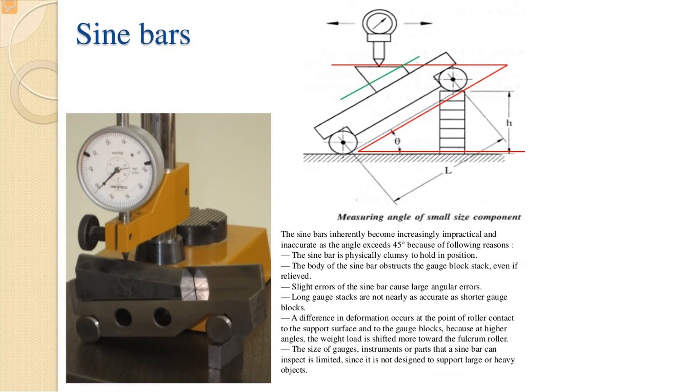In use of sine bars, we should take care of some points while using the sine bar. If the sine bar angle is above 45 degrees, the values are less accurate. First point is: workpiece above 45 degrees is difficult to hold. Second point is: the plane surface needs to be placed horizontally and a dial indicator is used. Third point is: when height increases above 45 degrees, the dial indicator also shifts fulcrum load.